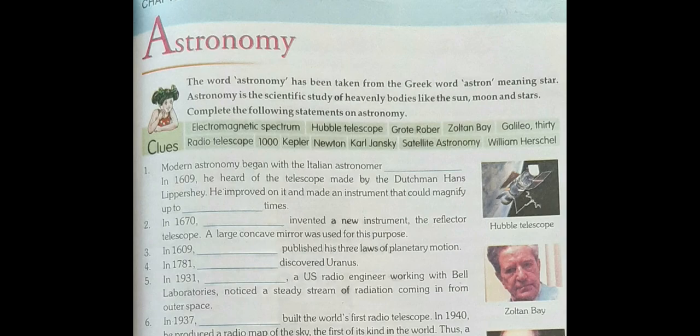Now in 1670, Newton invented a new instrument, the reflector telescope. A large concave mirror was used for this purpose.